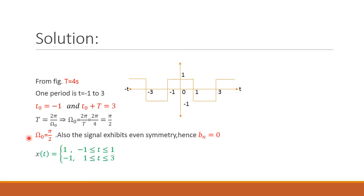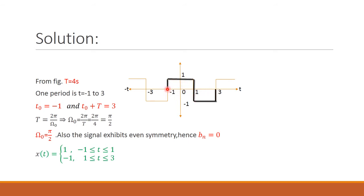First, from the figure, we should know the value of T, that is the period. The black line represents one period or one cycle, which goes from minus 1 to plus 3. So this is one cycle, and we can represent capital T = 4 seconds.